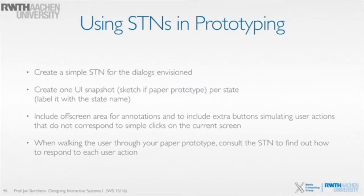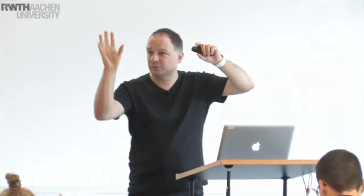It makes a lot of sense to label your sketches of your interface with little state names, so you name them like we did in the conducting or silhouettes example. When you do so, it often helps to have in your flipbook a little part where you show the interface and then have some part outside that where you put additional information — like stuff where you say, if the user does this, then we go to this other state, or simulating external things that happen, like the user picking up the baton. When you then want to walk the user through your paper prototype, you basically have the SDN as a little cheat sheet to tell you where to go.